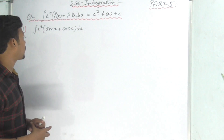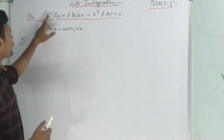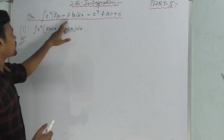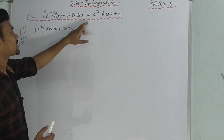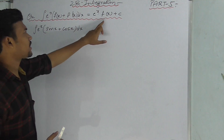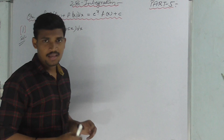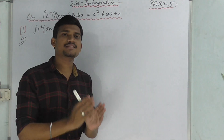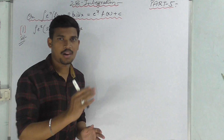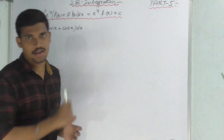This is another model. The integral formula is: ∫e^x [f(x) + f'(x)] dx = e^x·f(x) + C. This is the formula.